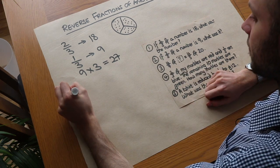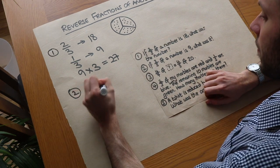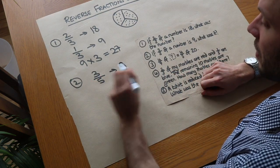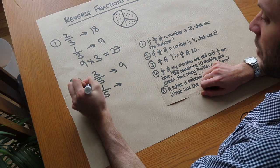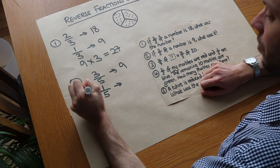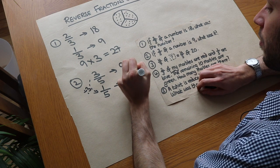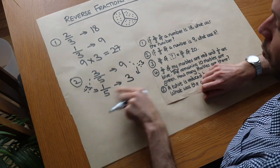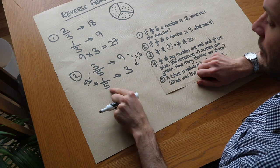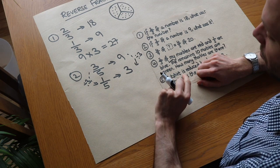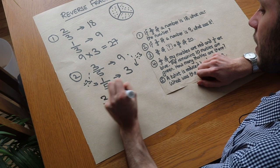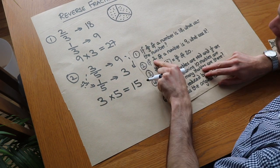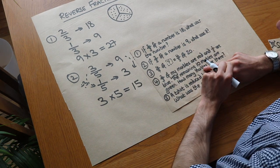What about the second one? If three-fifths of a number is nine, then what was the number? Well, if three-fifths is nine, then one-fifth of the number would be a third as much, so that must be three. If three-fifths is nine, one-fifth would be three, and then if a fifth of a number is three, we just need to do three times five which equals 15. We can check: three-fifths of 15 is indeed nine.